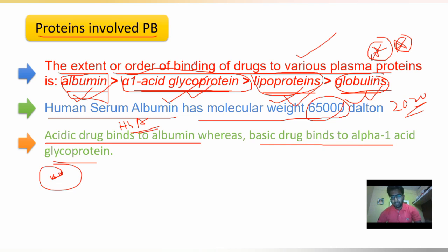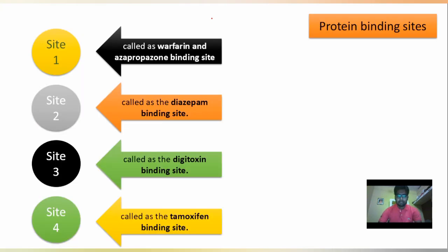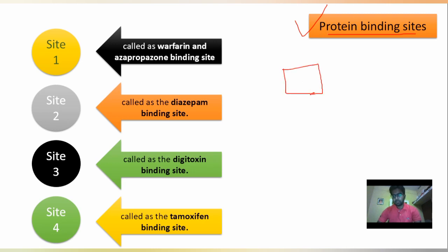After understanding the concept of protein binding, you have to remember these points as they are very important for your exam. Now, regarding protein binding sites: there are four distinct points on a protein where a drug molecule can bind. Site one is also known as the warfarin or azapropazone binding site.